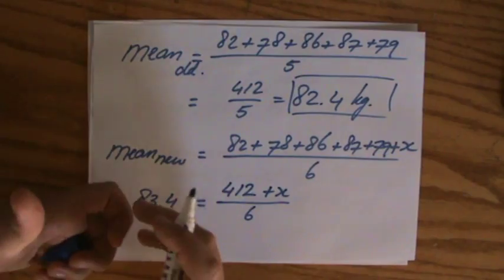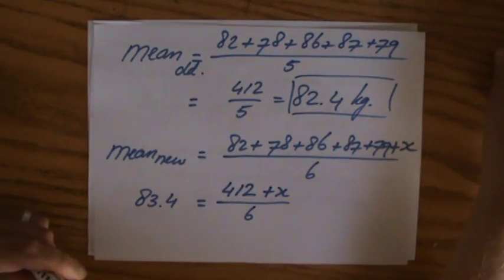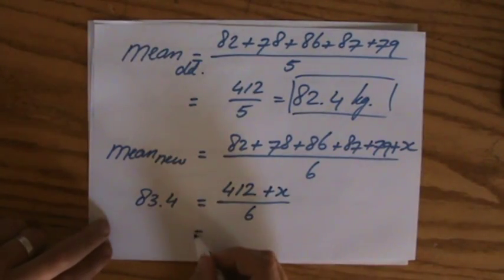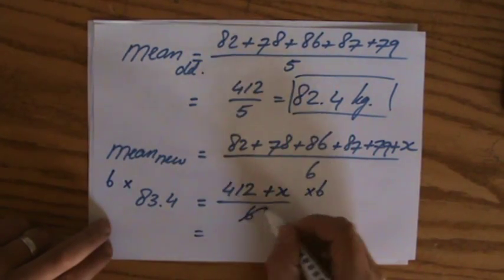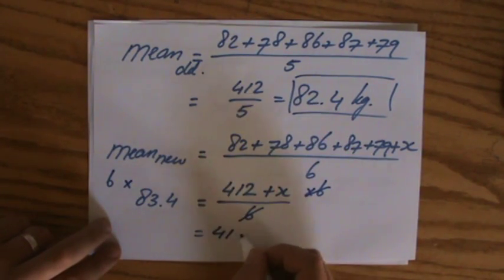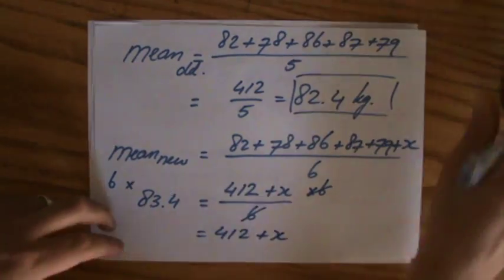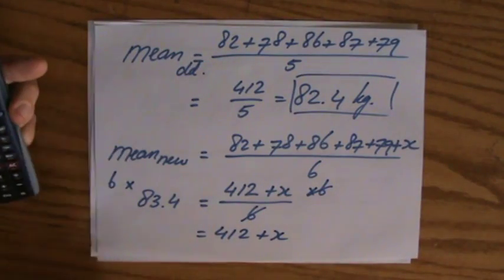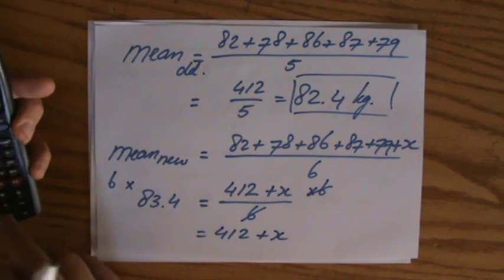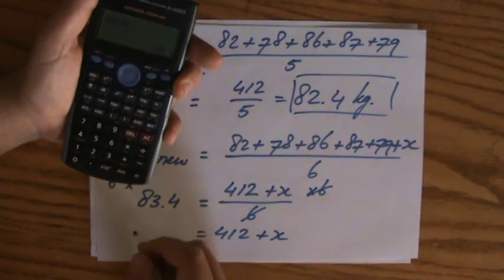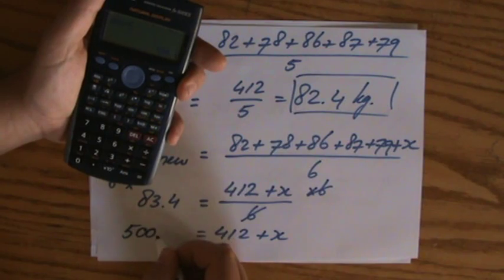And I have this beautiful algebraic equation which I can solve now. Because if I times both sides by 6, I can say that 412 plus x. And I'm very lazy now. I do apologize. It's been a very long day. Times 6 is 500.4.